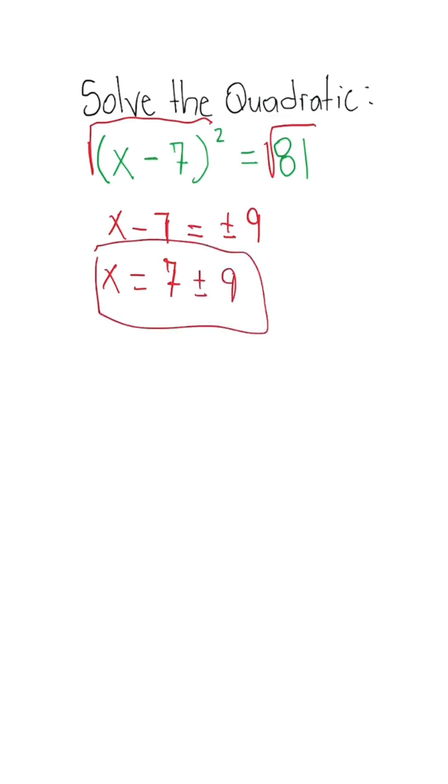So when we split our answers, we know that x is equal to 7 plus 9, which is 16. Or we could have x is equal to 7 minus 9, where we get x is equal to negative 2 as an answer.